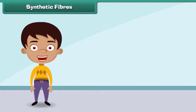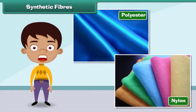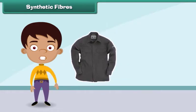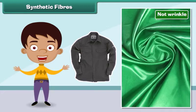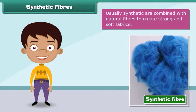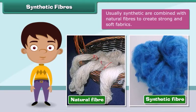Synthetic fibers are man-made. Nylon and polyester are examples of synthetic fibers. Fabric made from synthetic fibers is cheap, dries easily and does not wrinkle. Usually, synthetic fibers are combined with natural fibers to create strong and soft fabrics.